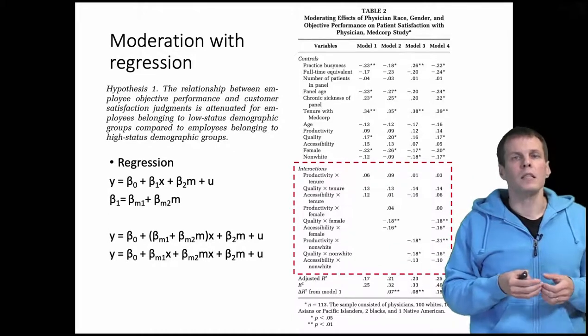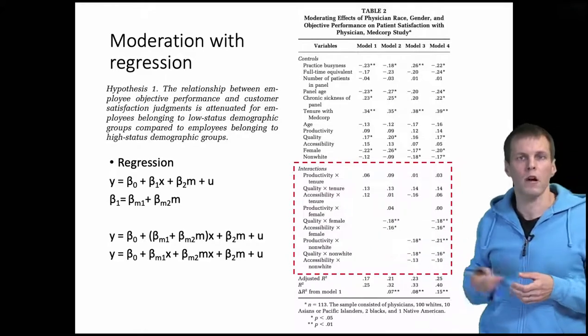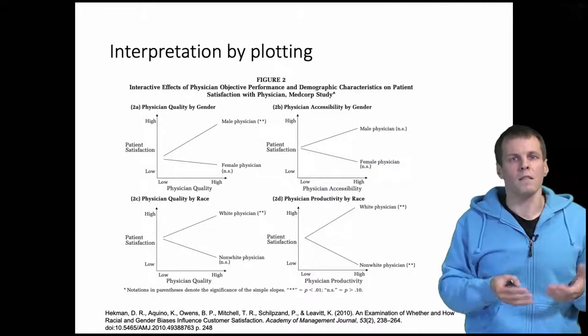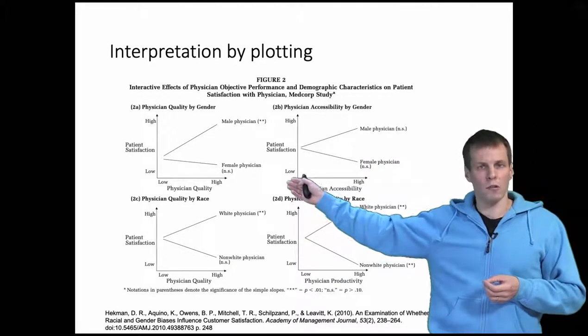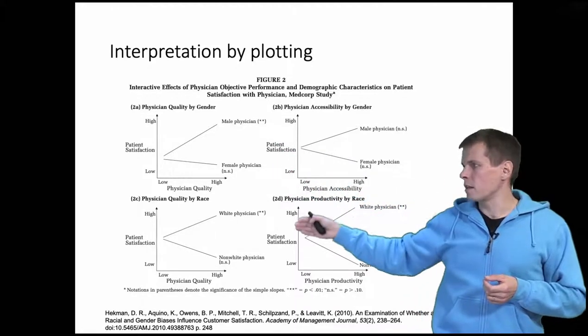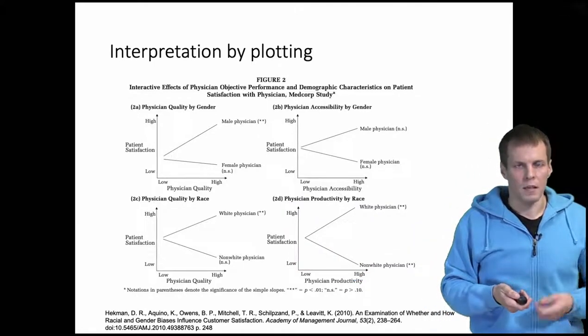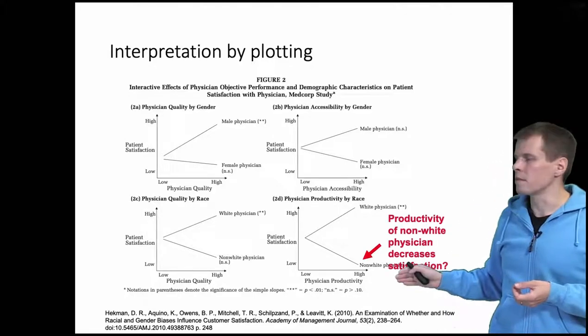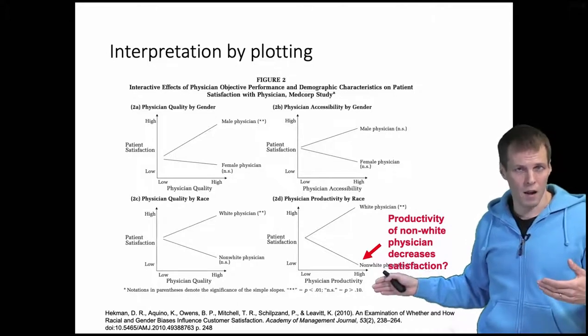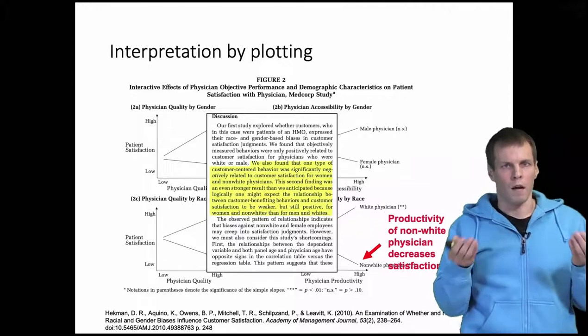In practice, interpreting the magnitude of these effects is difficult because they are interactions, so people will do plottings. In Heckman's paper they have these four plots, so they show that this is how the regression lines would go. This is the line for male, this is for female, this is for white, this is for non-whites. And they found something really interesting. They found that actually if you are non-white, then if you get better, you get more productive, then you're actually penalized in the customer satisfaction score.